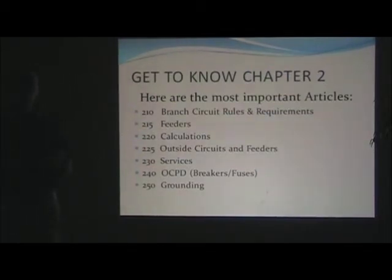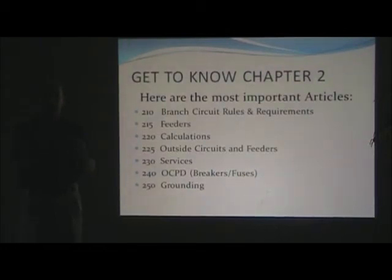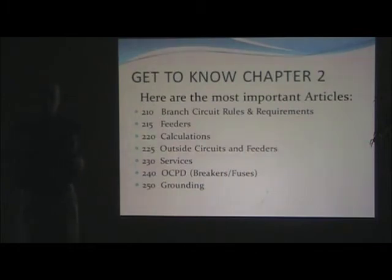A separately derived system is a service that is separated from another service and must, by its own definition, have its own grounding and bonding rules. A transformer is a perfect example - when you transform a voltage class from 480 down to 240 volts, you have two windings separated around the core. That inductive reactance between the primary side and secondary side causes the voltage to step down, but the two windings are physically separated from each other.